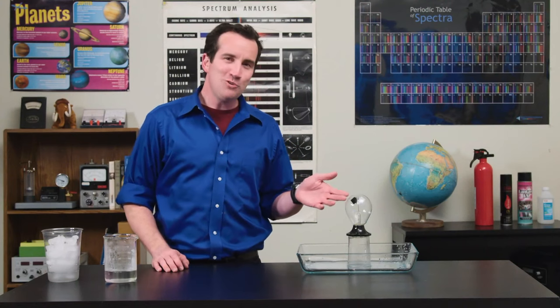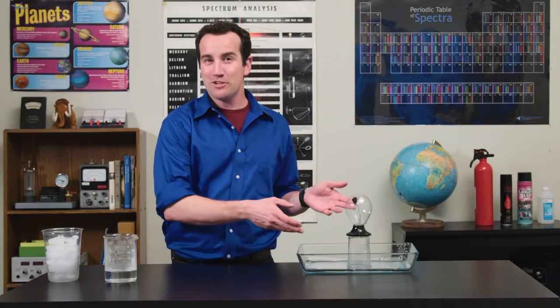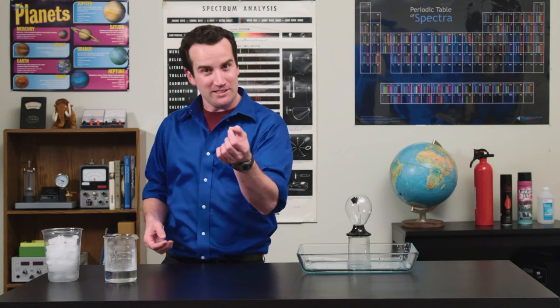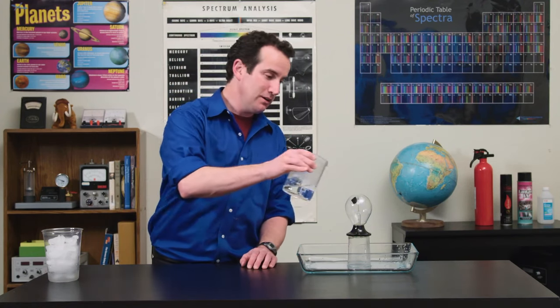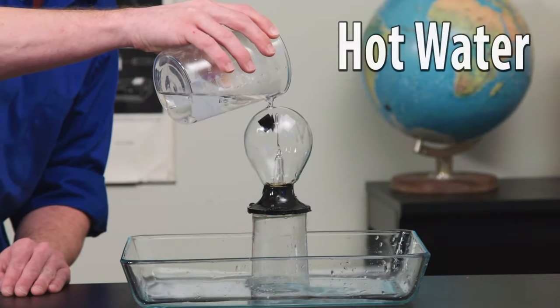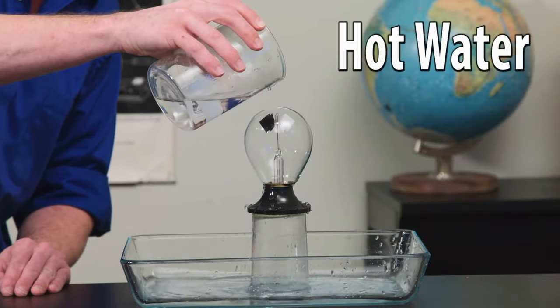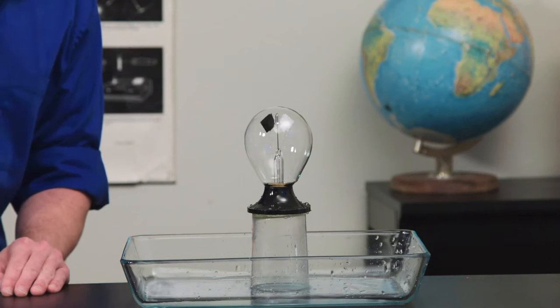But what most people don't emphasize is that the radiometer is driven not by light but by heat. And you can illustrate this by pouring some hot water on top. It begins to spin very quickly.